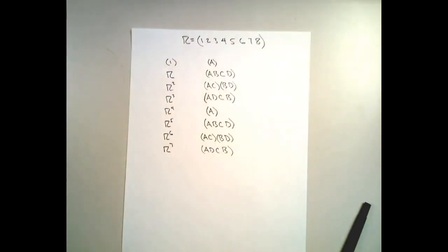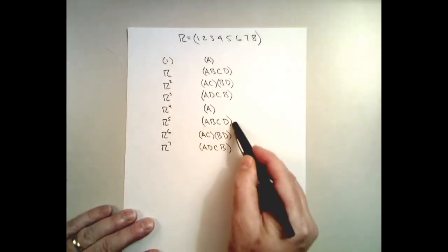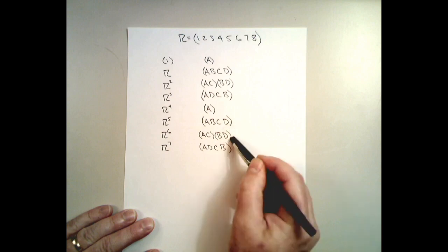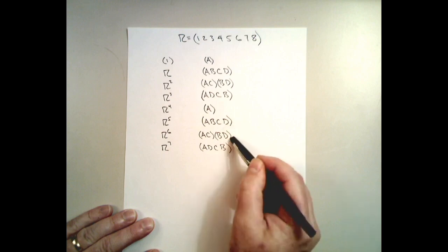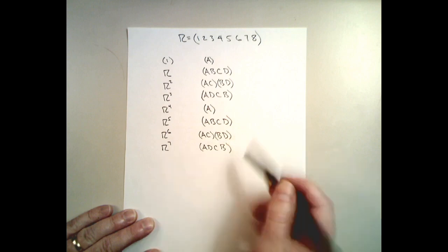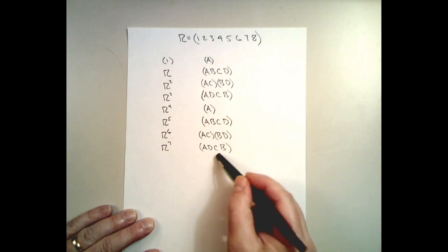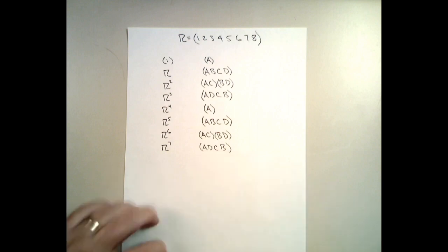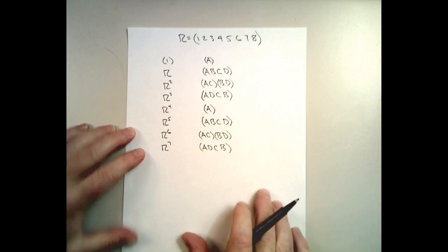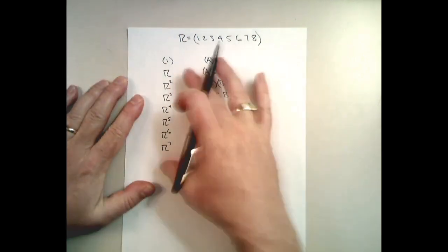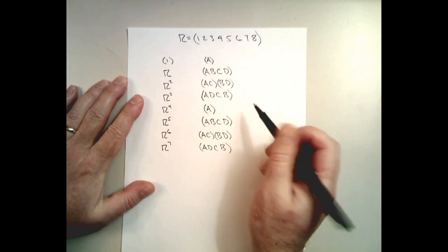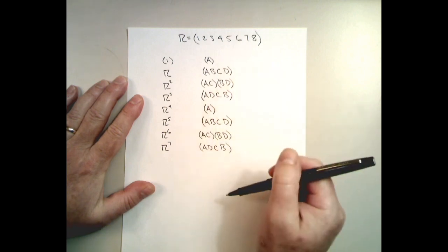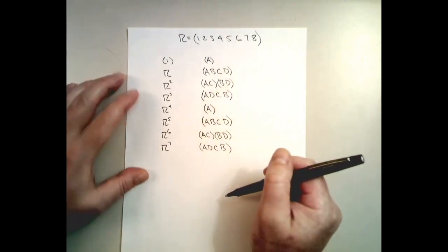And then we could continue. Five rotations is going to bring us back to A, B, C, D. Six rotations is going to be A to C, C to A, B to D, D to B. And then seven rotations: A to D, D to C, C to B, and B to A. This suggests a function between the two groups — between the group of rotations of elements one through eight and the group of rotations of the letters A, B, C, and D.